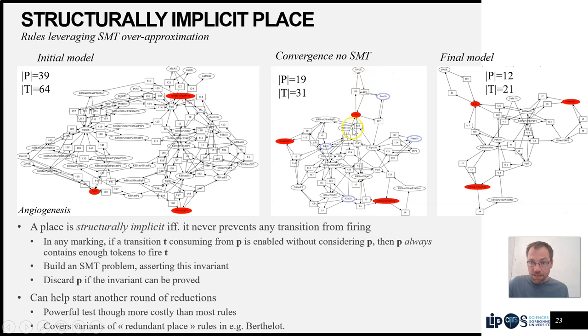And then I have simpler transitions that can be reduced now, on which I can apply structural reduction rules. So we can go for another round of iteration of applying rules and reach this final model which is much smaller than this version. So this is very powerful, but of course it's more costly than most of the other rules that are just looking at the normal structure of the net since we have a call to the SMT solver.